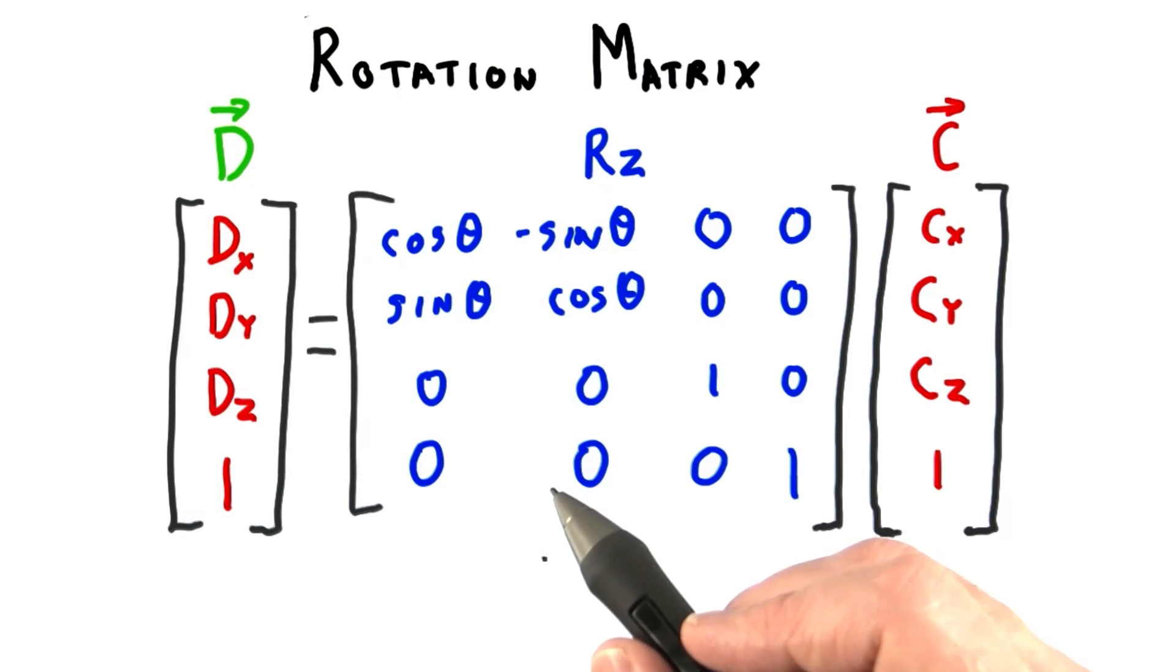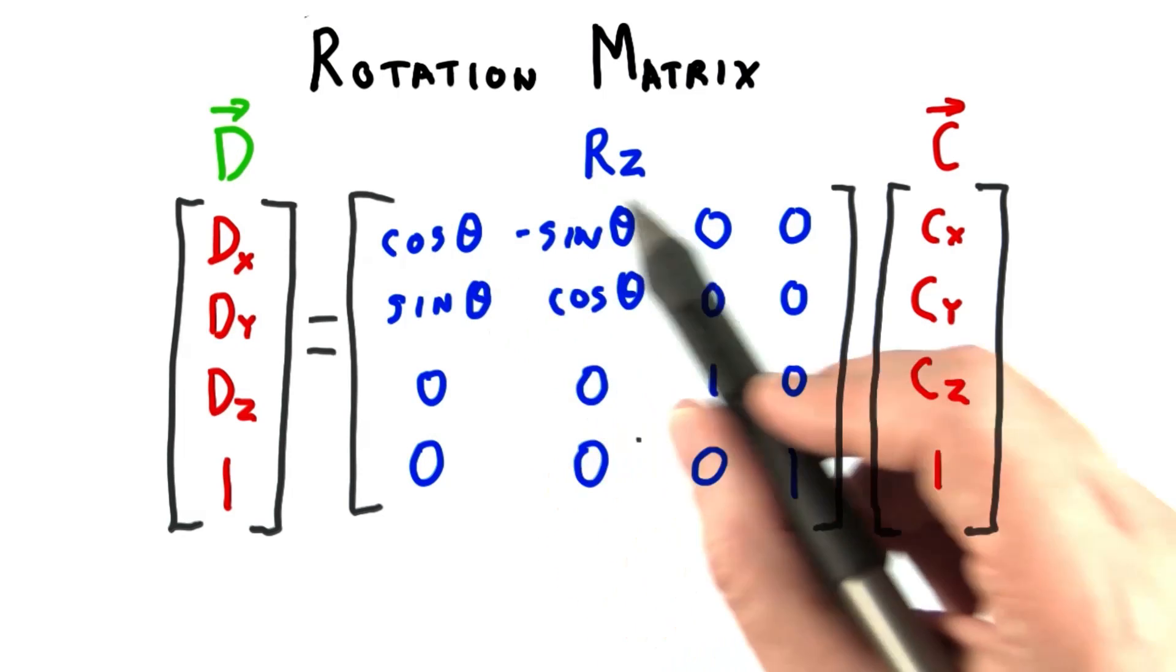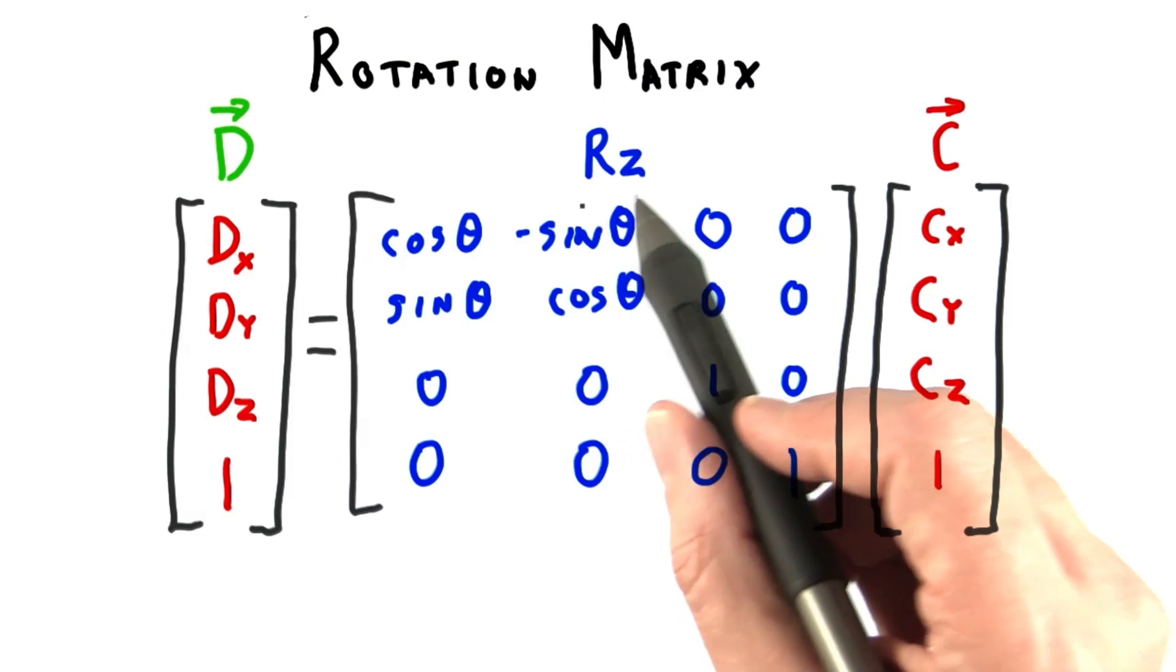3JS gives you a bunch of ways to form rotation matrices. Here's what one of them looks like, a rotation around the z axis.